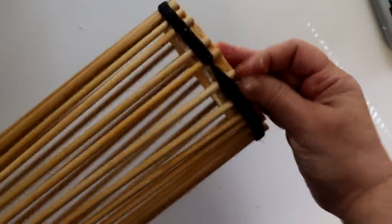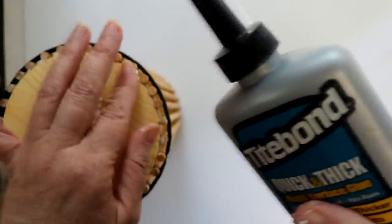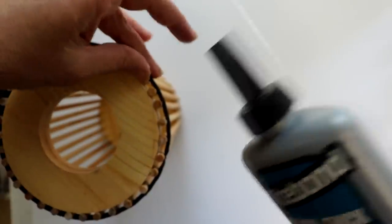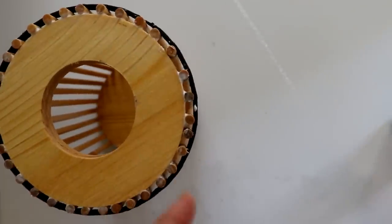To further secure, I pulled each dowel slightly forward and added a little more glue in behind. Lastly, I just cleared up any excess glue, then set the lantern aside for the glue to fully cure.